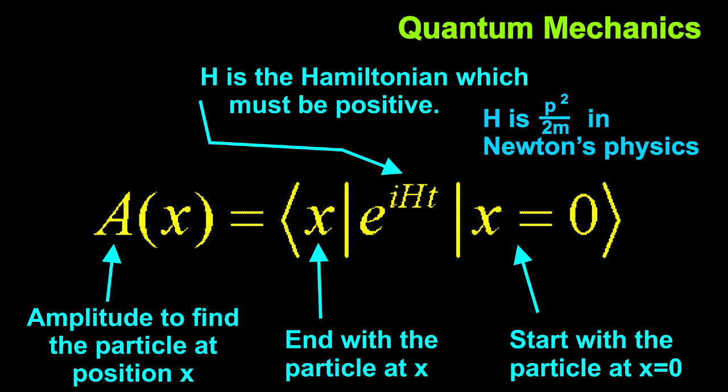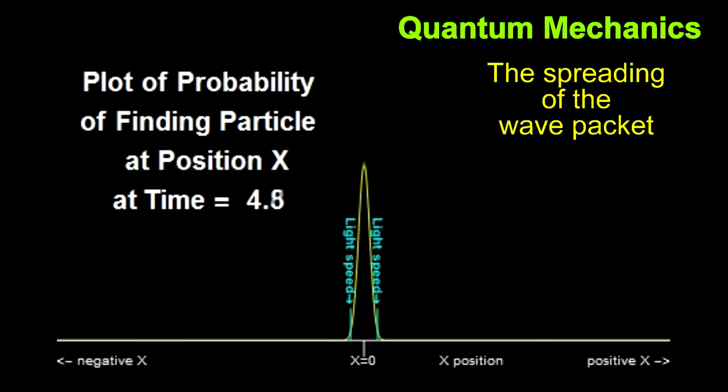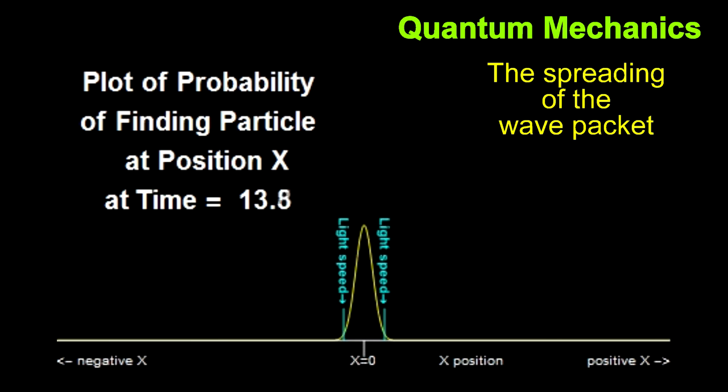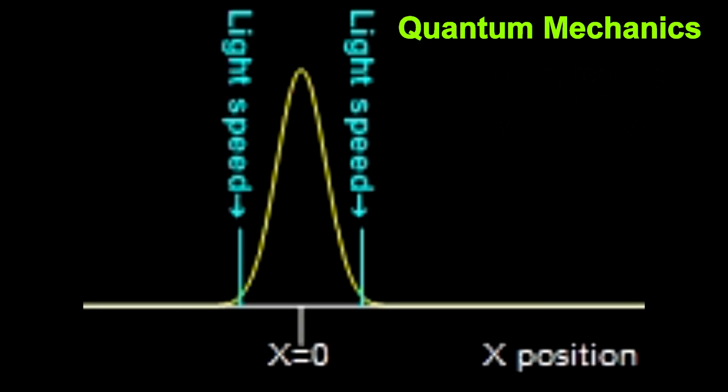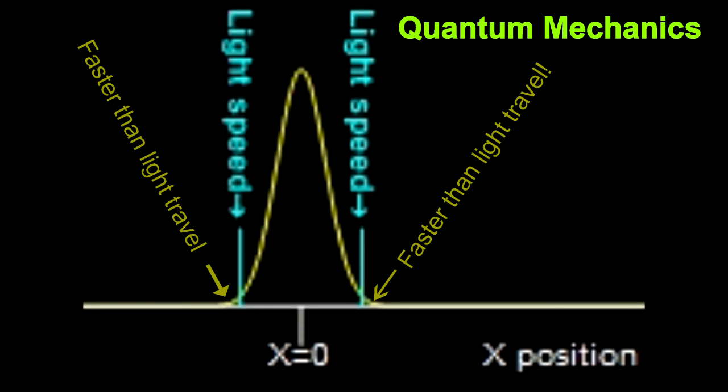The problem with quantum mechanics is that the expression will always allow faster than light travel, because you can never drive the expression to zero without using negative energies. The wave packet will always leak out faster than the speed of light. I'm not going to use a video to prove that statement mathematically. I'll put links to the proof in the section below.